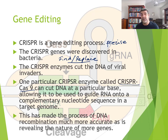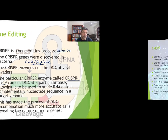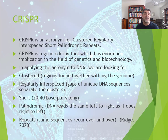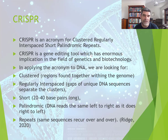The consequence of this is that it's made the process of DNA recombination much more accurate, and it's helping us to reveal the nature of even more genes than we knew before. CRISPR is an acronym — you know that scientists love acronyms, and this is a good one because you don't want to be talking about 'clustered regularly interspaced short palindromic repeats' all the time. CRISPR is a much nicer, easier, shorter version of that.